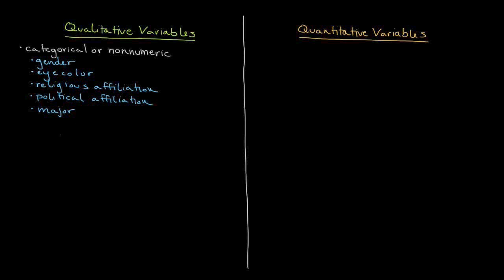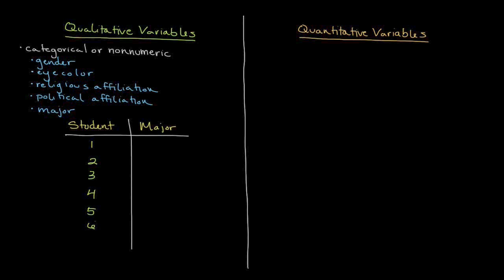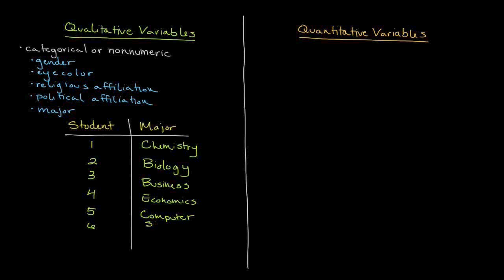For example, if we were to survey students related to their major at a college, it would look something like this. Our focus here is on the actual non-numeric variable — finding out which particular major they are in, not necessarily the quantity within any particular major, although we can certainly go there.